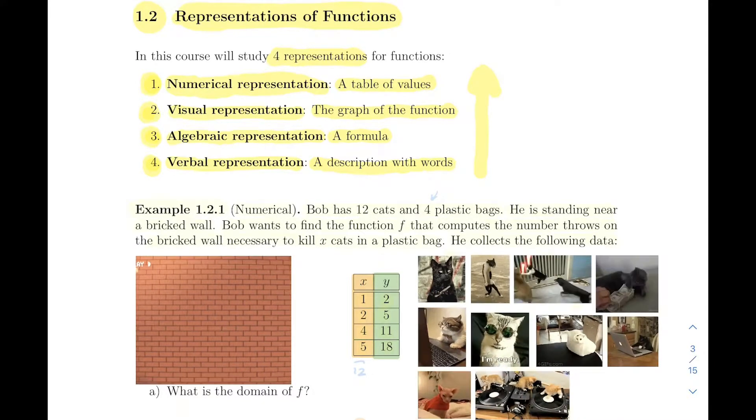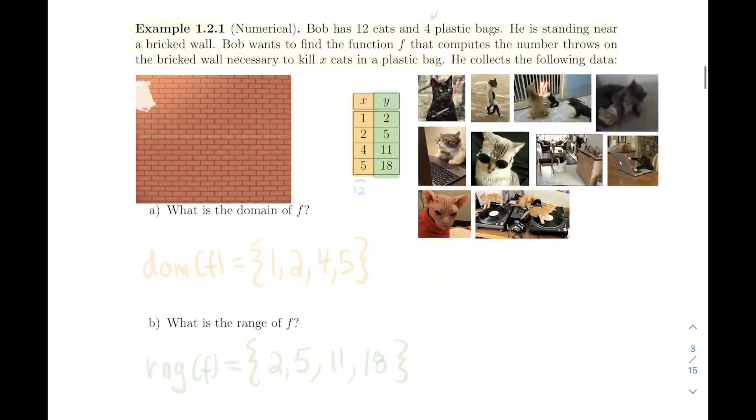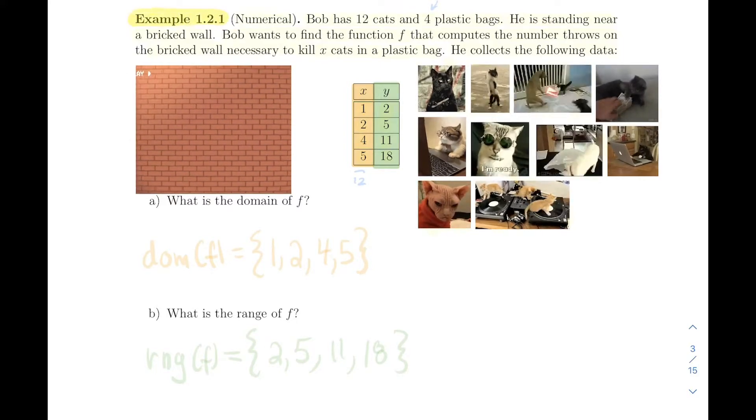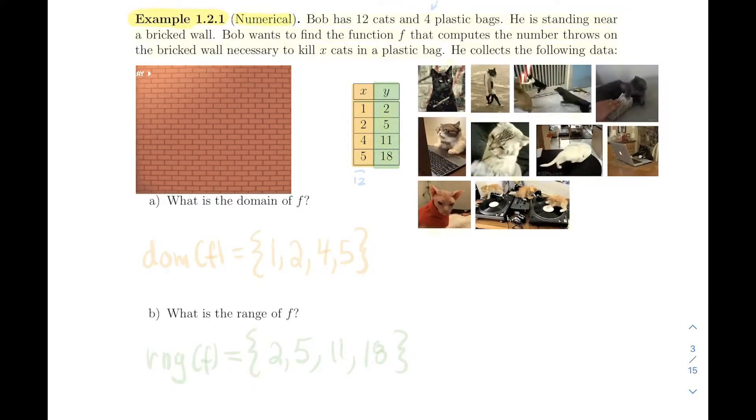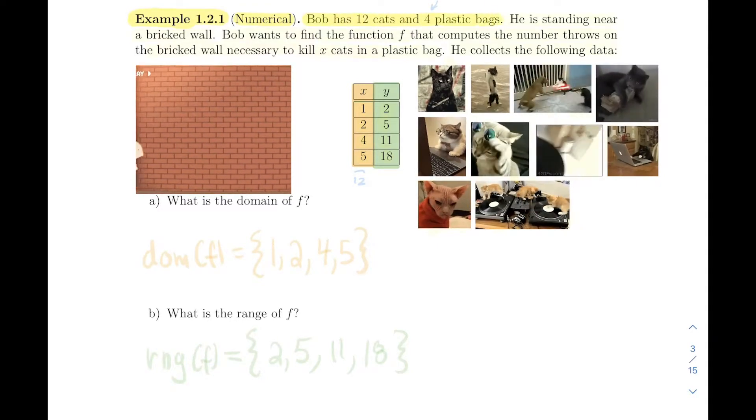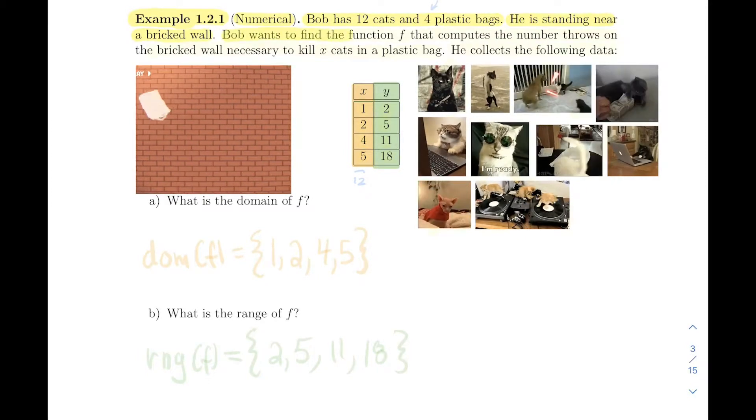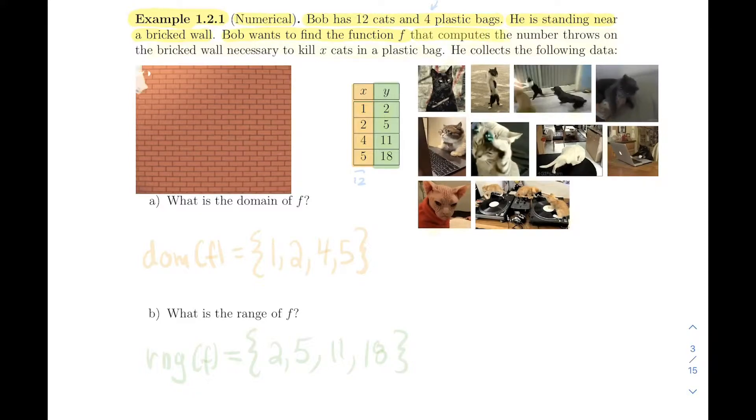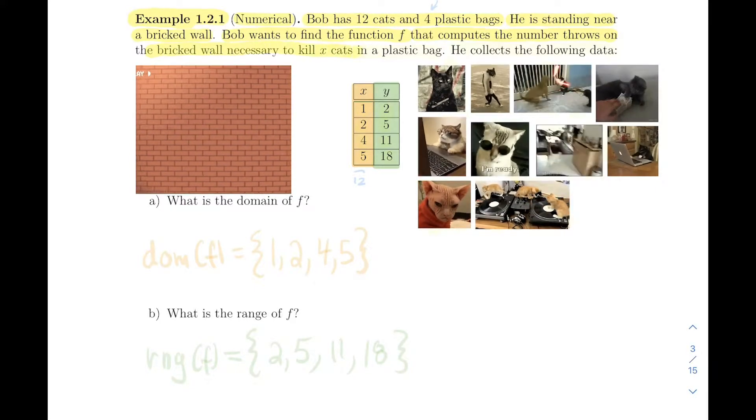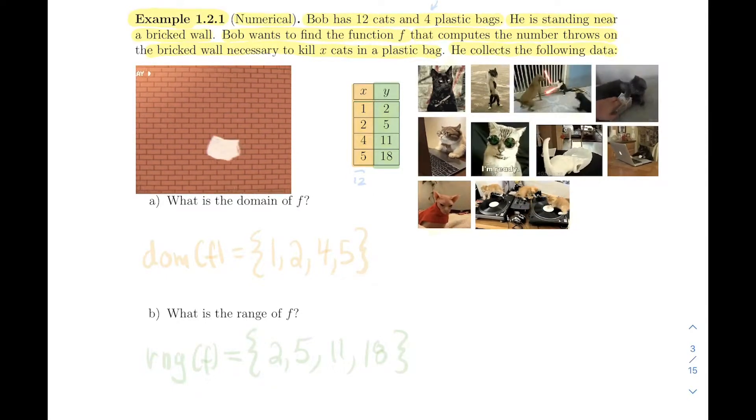Let's look at our first example. An example of a function that is defined by a table, a numerical example. Suppose I have 12 cats in 4 plastic bags. Suppose I am standing near a brick wall, and I want to find the function f that computes the number of throws on the brick wall necessary to kill x cats in a plastic bag.